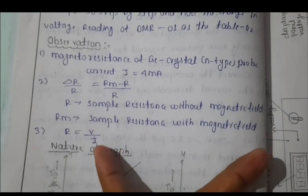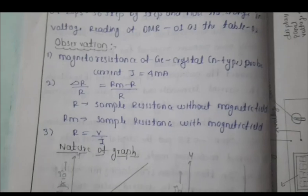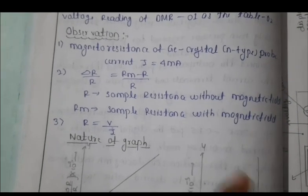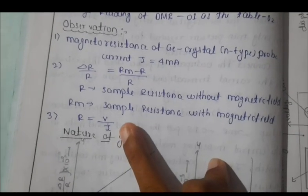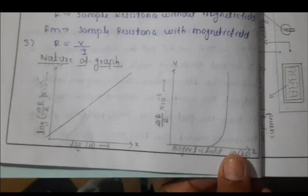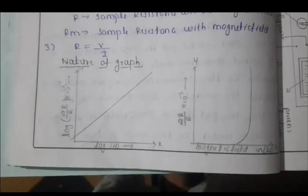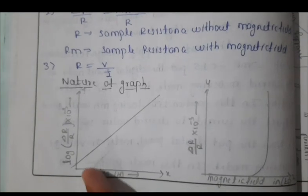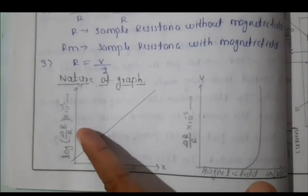The formula to calculate magneto resistance is R equals V voltage divided by current. For the nature of graphs for this experiment, two graphs we have to plot here.